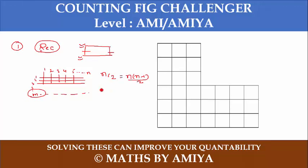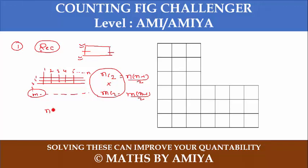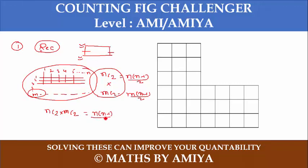If you want two lines out of M lines, then MC2 is M into M minus 1 by 2. The number of rectangles is the product NC2 into MC2, which equals N into N minus 1 by 2 into M into M minus 1 by 2.